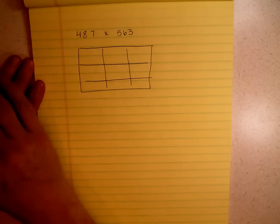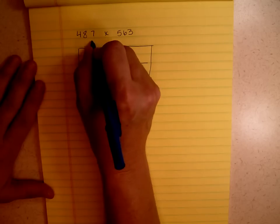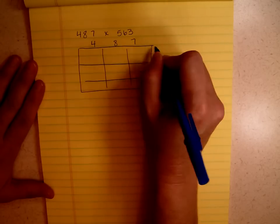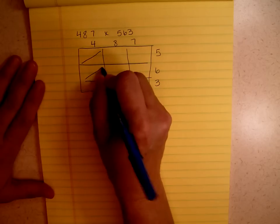What numbers go across the top? What numbers go down the side? 4, 8, 7, 5, 6, 3. What did I forget? I forgot to divide my boxes in half.